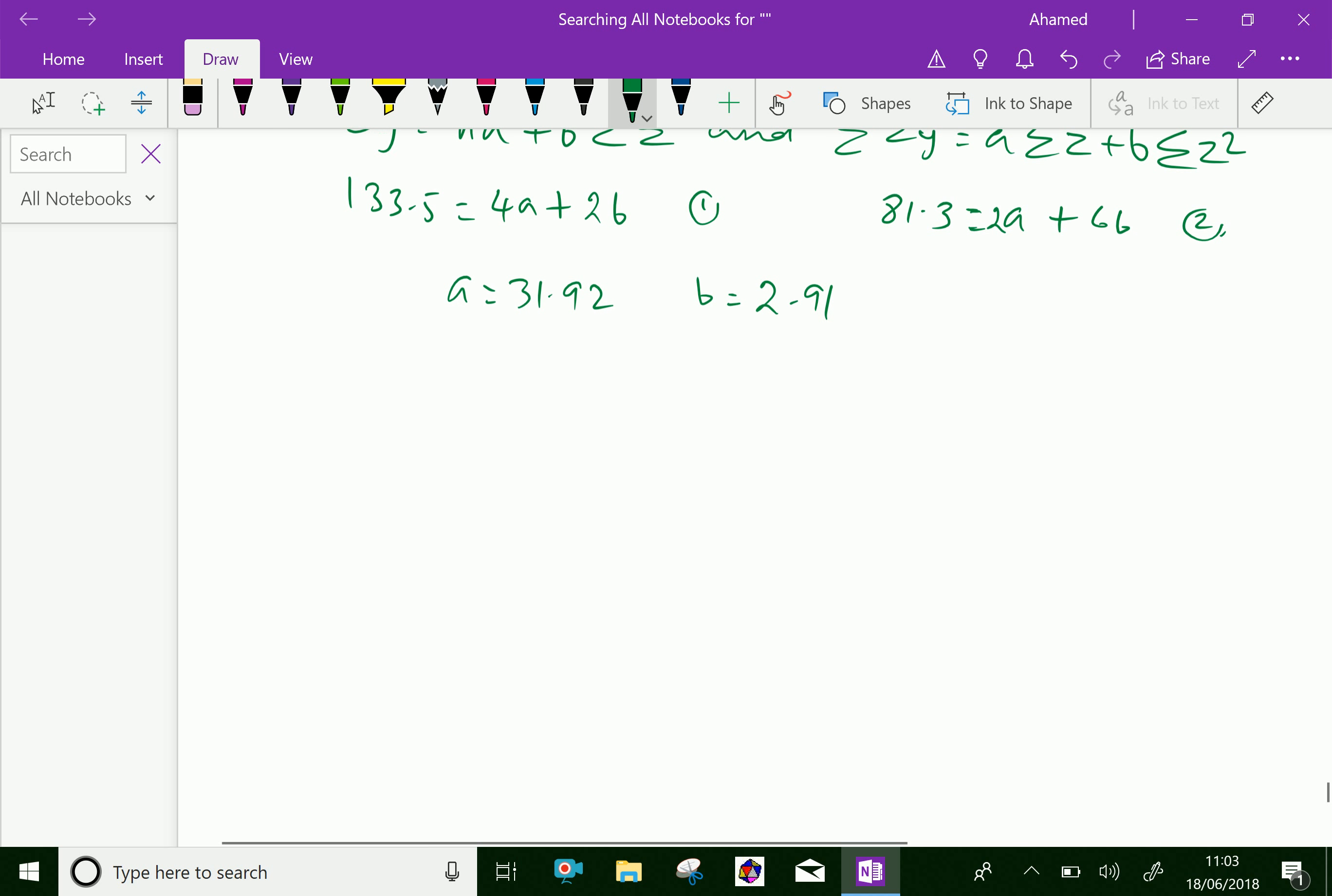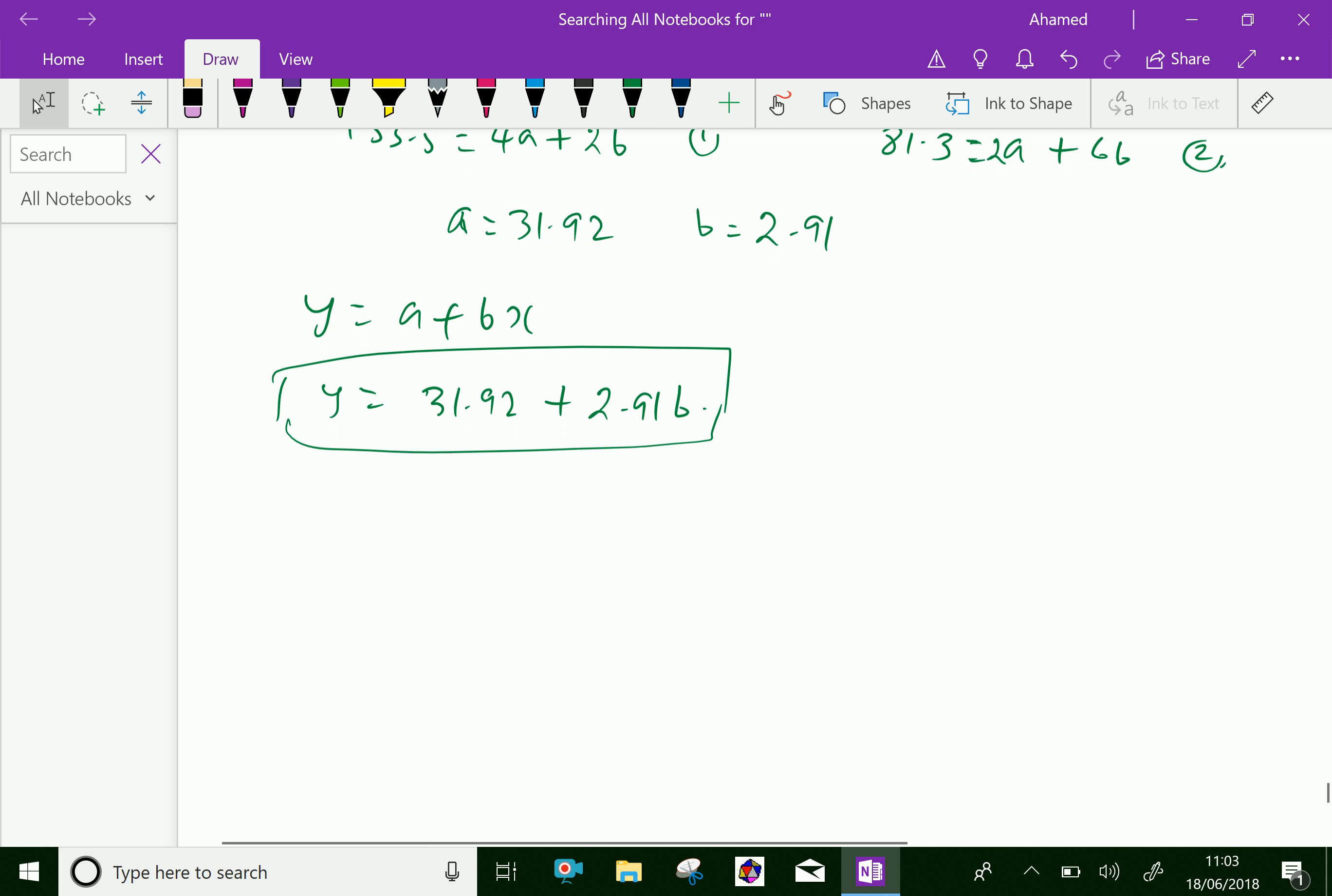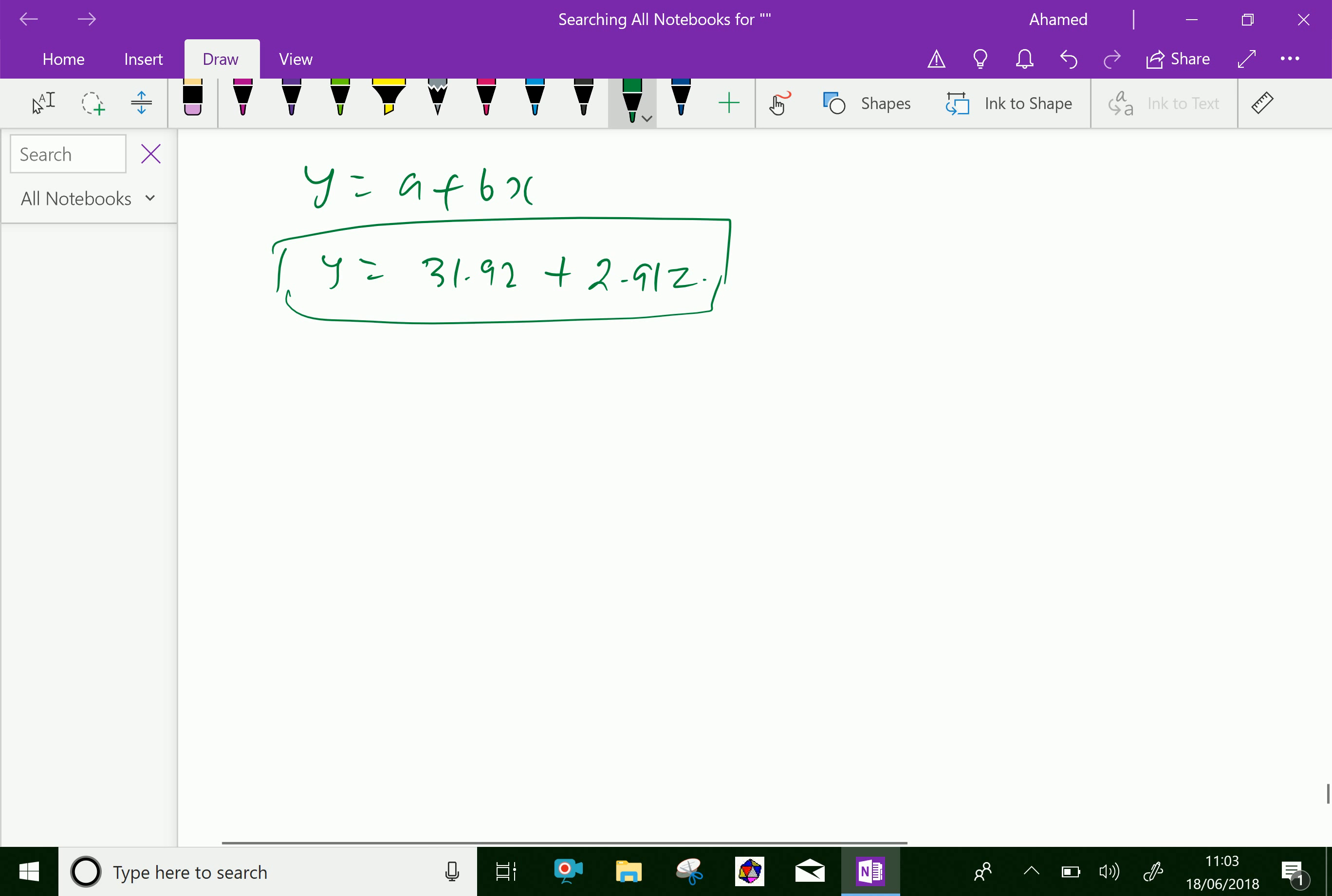Now, apply these values a and b in the equation y equal a plus bx, we get y equal 31.92 plus 2.91b. This is a required linear equation for the population problem. Now, not b, it is z. Here, instead of x, we are writing z.